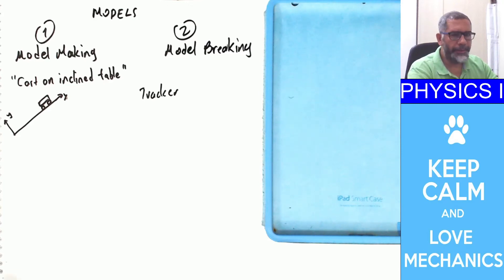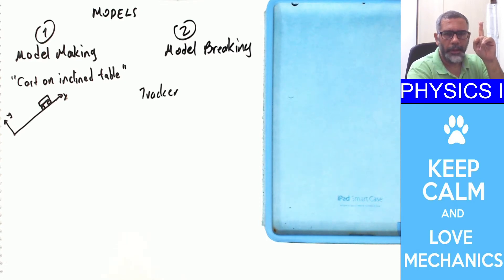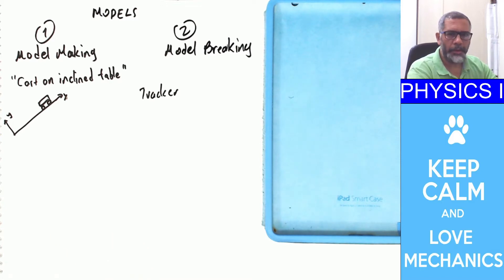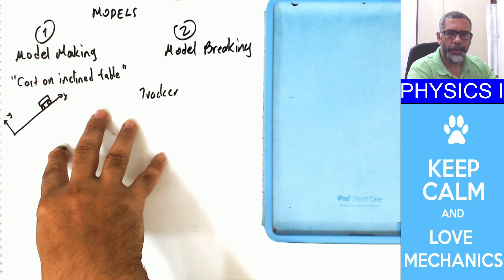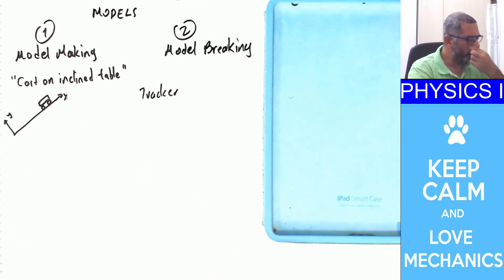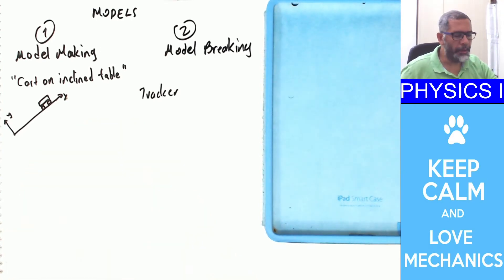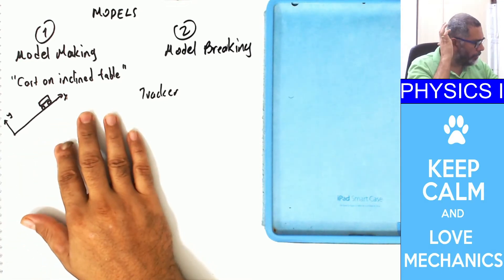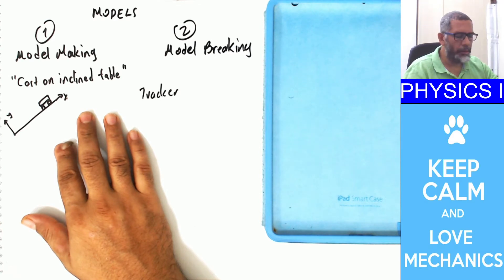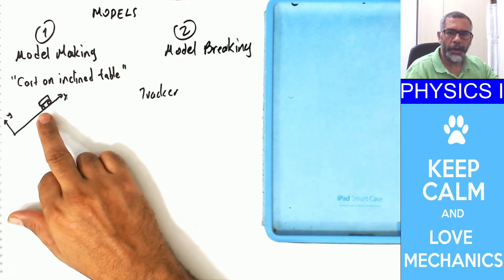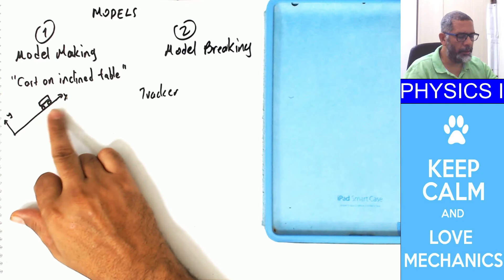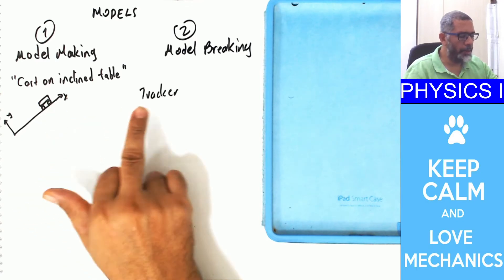Before you watch this video, please first watch the one linked at the top of this video — Introduction to the Models in Freshman Physics — because what I will explain here is connected to that previous one. This video will talk about how to make a model of a card going on an inclined table using Tracker Software.